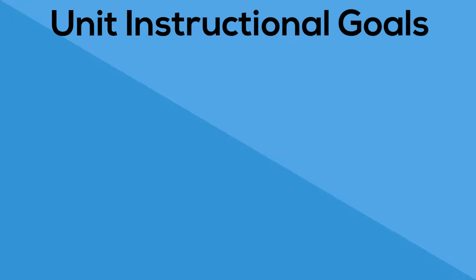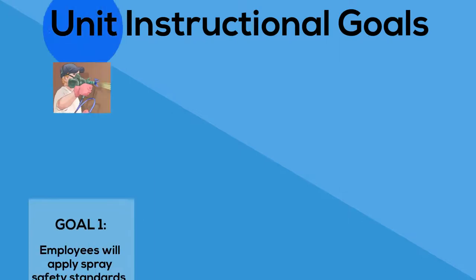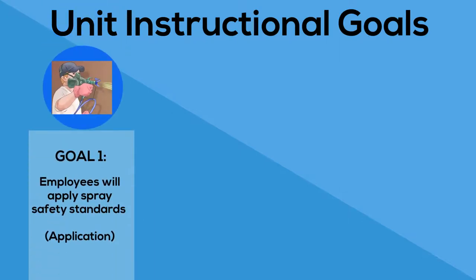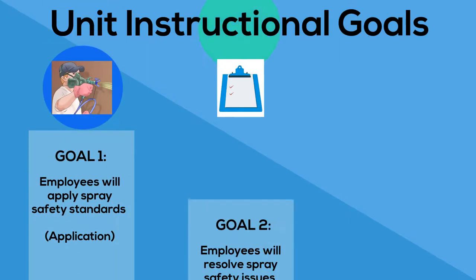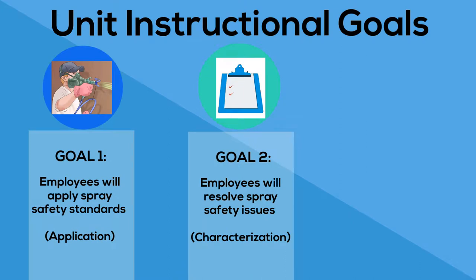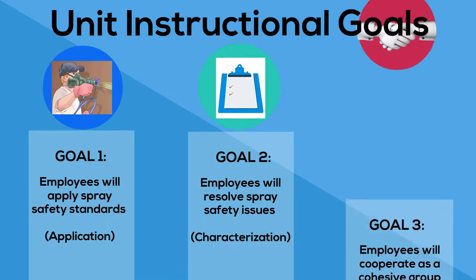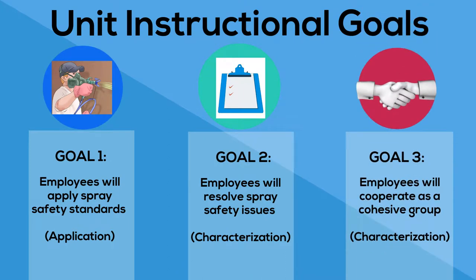There are three instructional goals for the Safe Agricultural Spray Application Curriculum. They are that employees will apply spray safety standards, that employees will resolve spray safety issues, and that employees will cooperate as a cohesive group. Under each of these goals is the respective taxonomy with which each goal aligns.